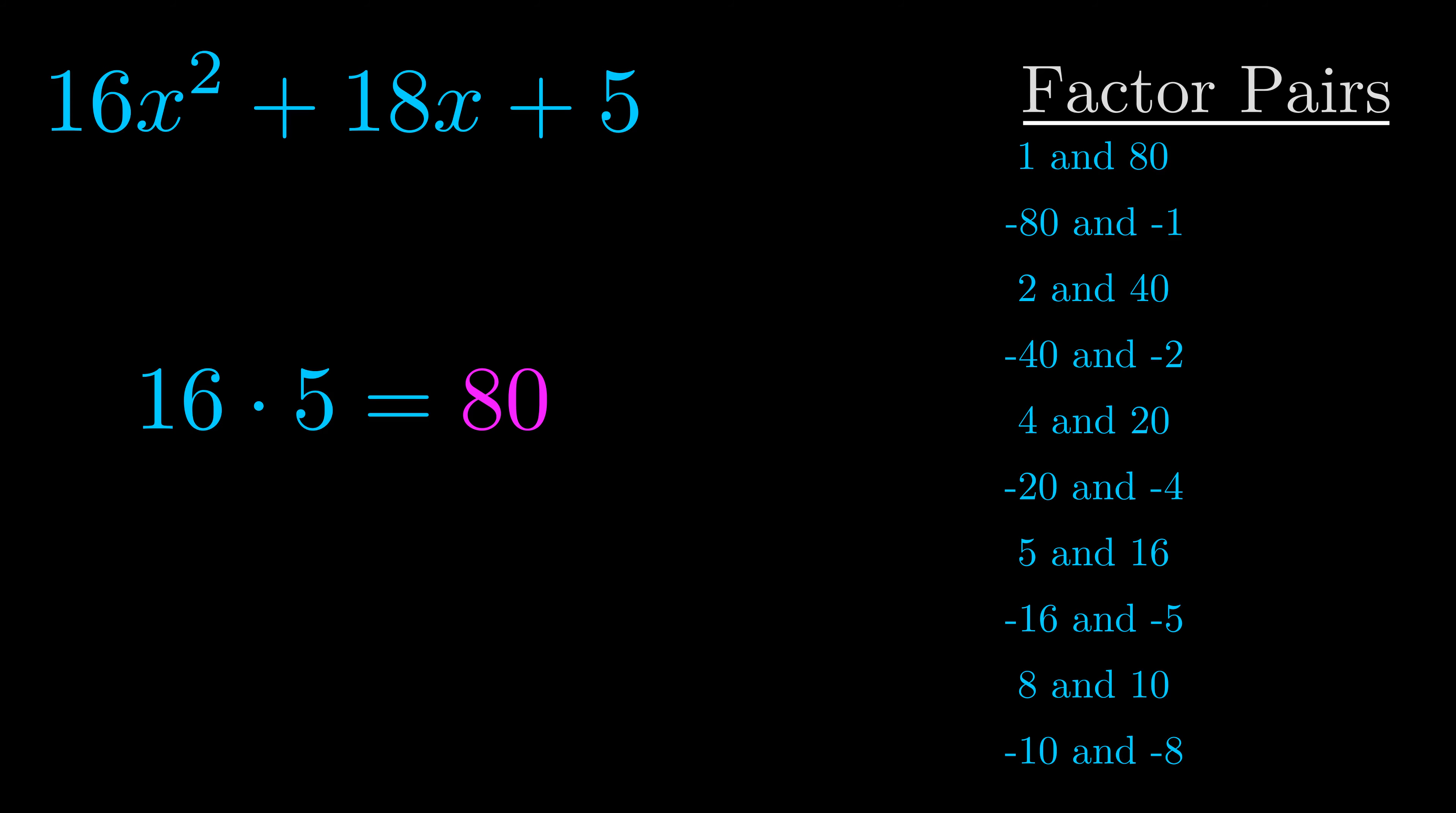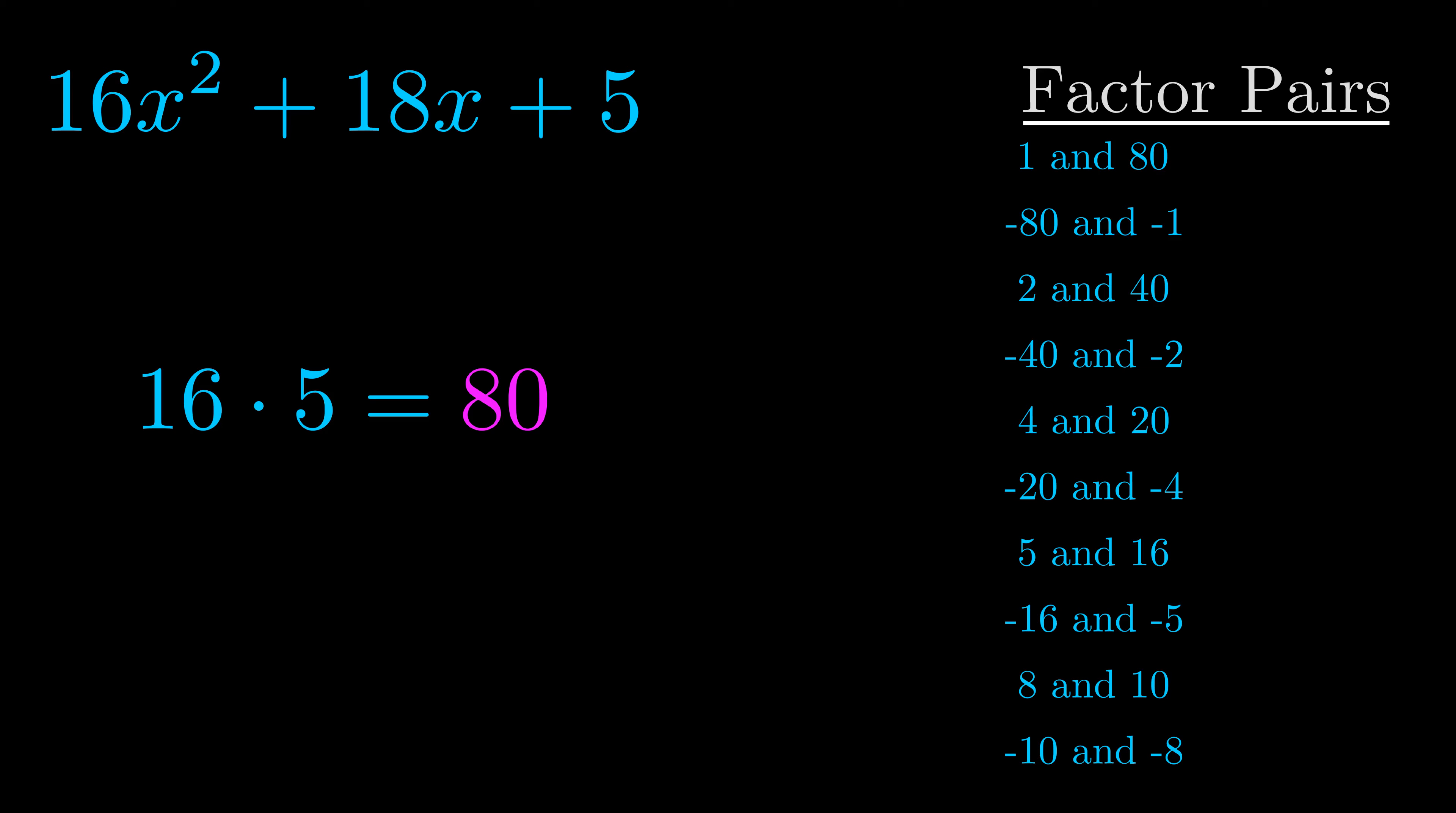Now once you have these factor pairs, the goal is to find which of these pairs adds to the b value. The b value is the coefficient on the x term. That's the middle term, the one that we haven't done anything with yet.